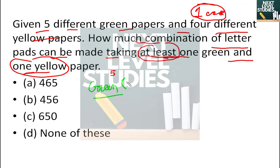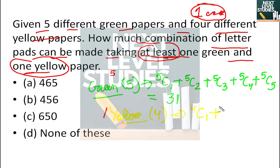For 5 different green papers, we have 5C1 plus 5C2 plus 5C3 plus 5C4 plus 5C5, which equals 31. For yellow papers, we have 4C1 plus 4C2 plus 4C3 plus 4C4. That's 4 plus 6 plus 4 plus 1, which equals 15. So green has 31 ways and yellow has 15 ways.